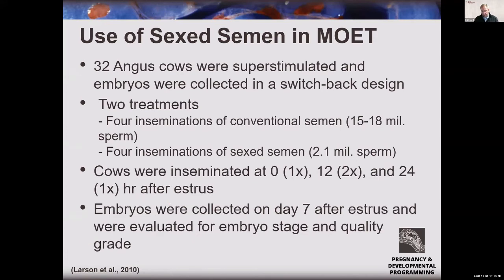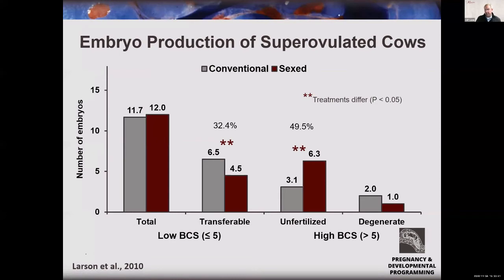In a study of 32 donor Angus cows serving as their own controls — superovulated and flushed to either sexed or conventional semen — the total number of ova was not different between treatments. However, transferable embryo numbers decreased with sexed semen, and unfertilized ova numbers increased. Fertilization rates were certainly lower with sexed semen in this experiment.